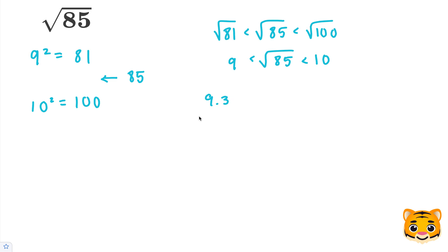Let's start with 9.3 times 9.3, and we'll see how close we can get to 85. 3 times 3 is 9. 9 times 3 is 27. Add our 0. 9 times 3 is 27, carry the 2. And 9 times 9 is 81, plus 2 is 83. When we add these together, we end up getting 86.49, which we can see is close to 85.